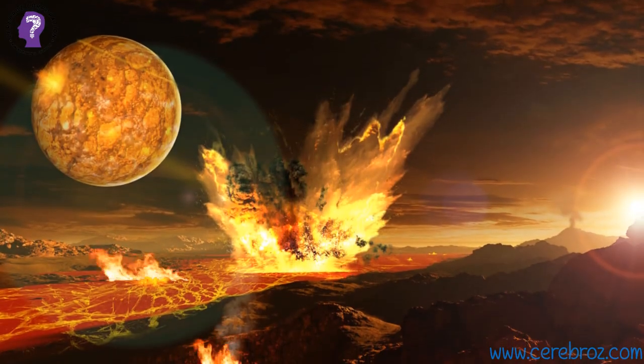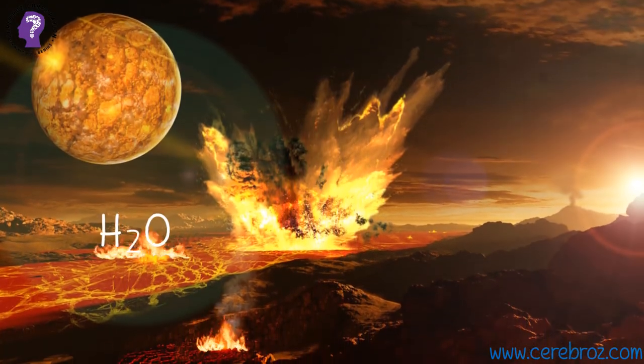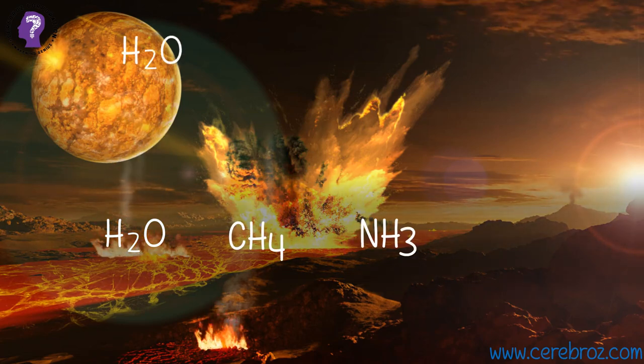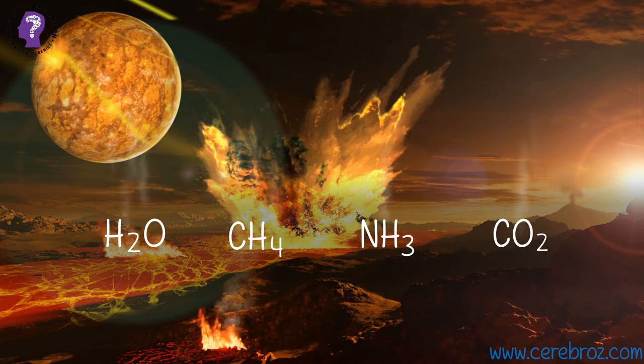On early Earth, there was a hostile environment. Water vapor, CH4, NH3, and CO2 were releasing from Earth's surface.